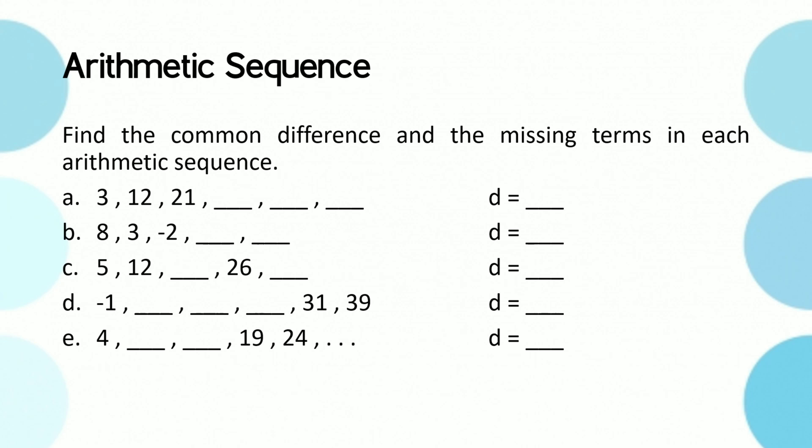Okay, time's up, so put your pens down if you're using one. Common difference is obtained by subtracting the previous term from the next term. For letter a, that's 12 minus 3 is equal to 9. Thus the missing terms are 30, 39, and 48.